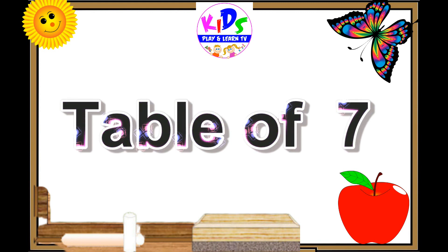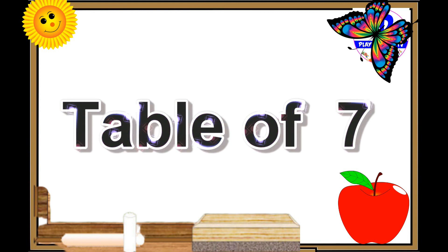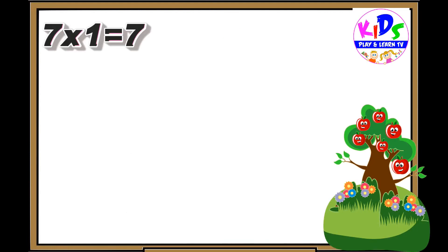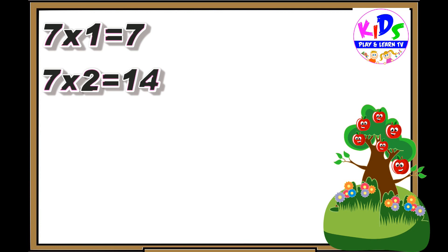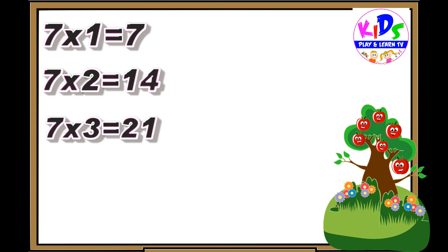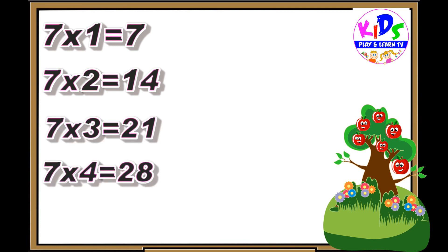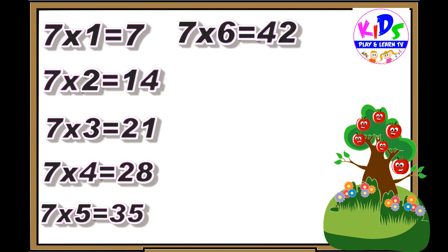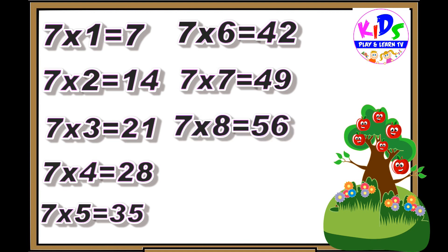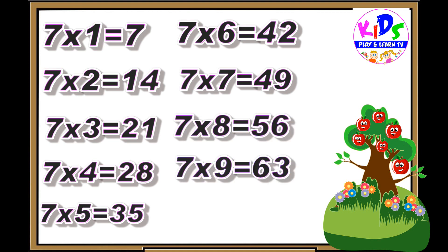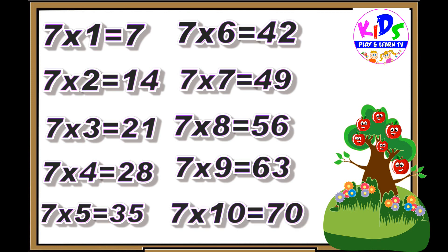Hey kids, let's repeat. Seven ones are seven, seven twos are fourteen, seven threes are twenty-one, seven fours are twenty-eight, seven fives are thirty-five, seven sixes are forty-two, seven sevens are forty-nine, seven eights are fifty-six, seven nines are sixty-three, seven tens are seventy.